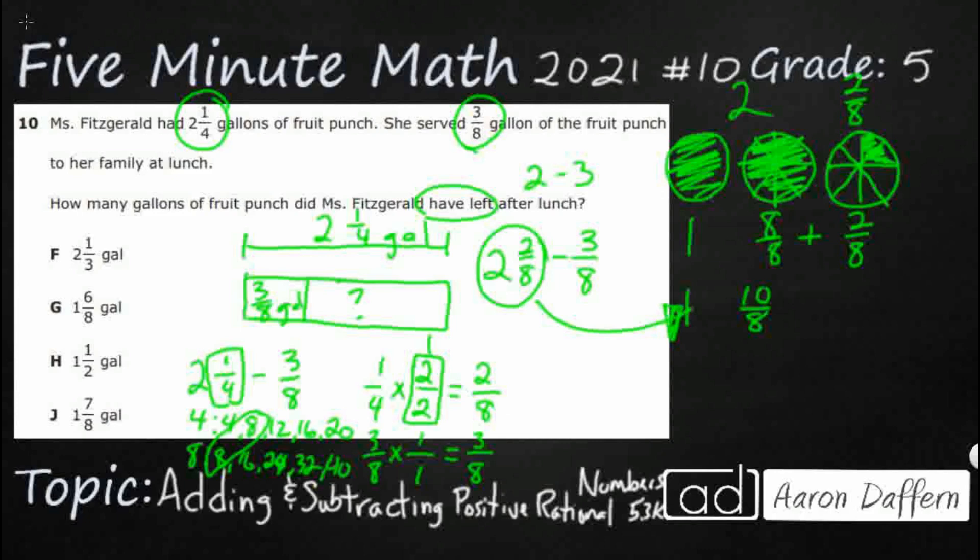1 and 10/8 minus 3/8 is going to give me 10 minus 3, that's going to give me 7/8. The whole number is just 1 and 7/8. The answer is J. We'll see you next time.